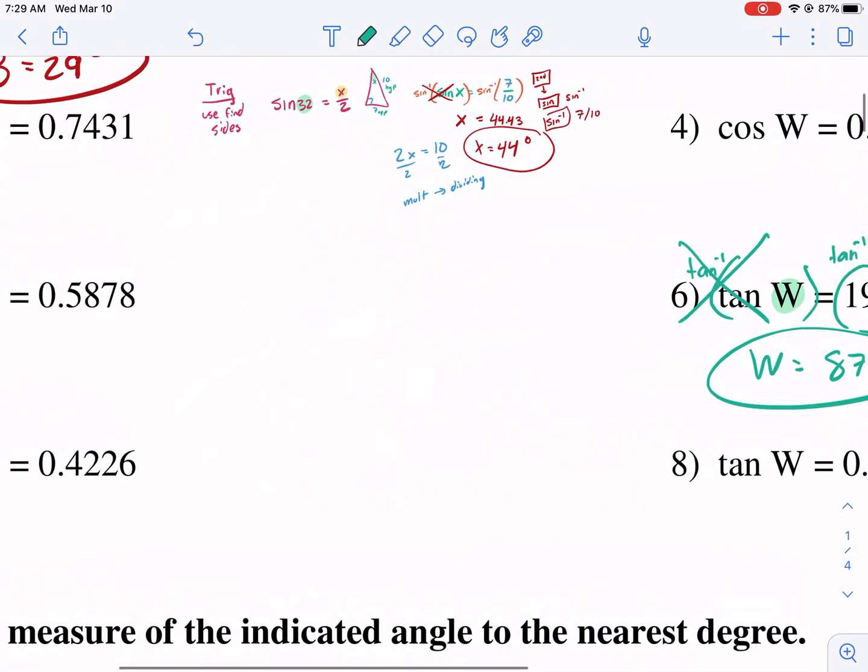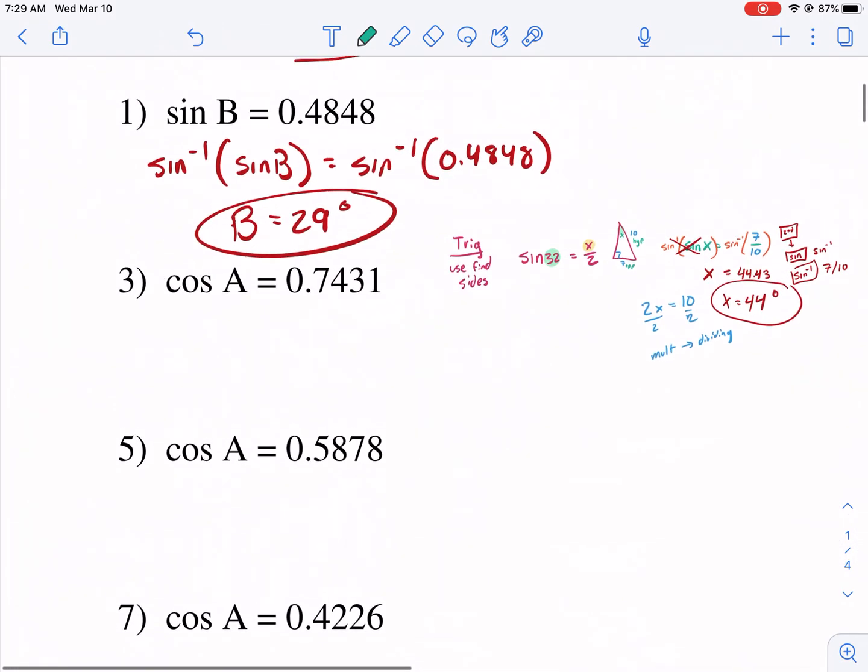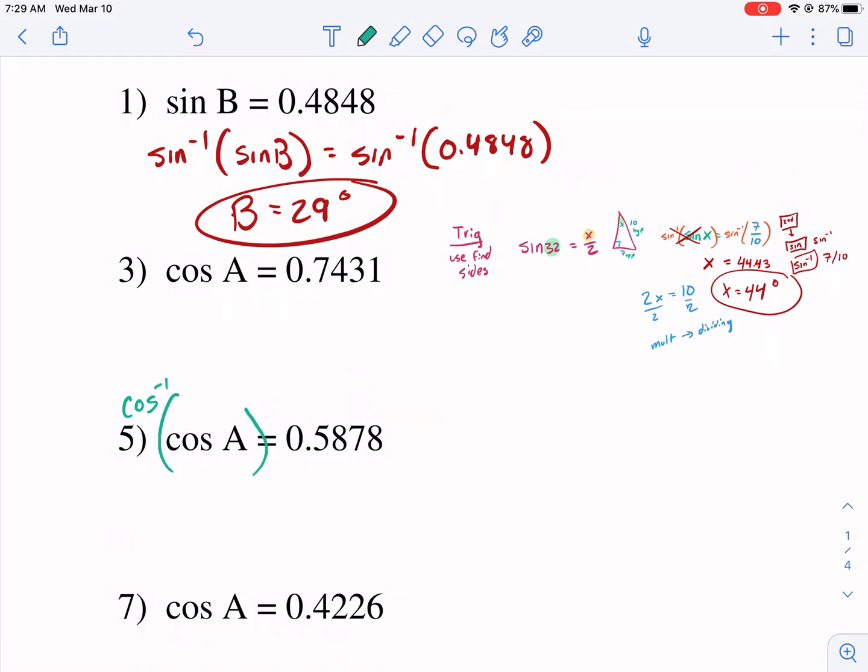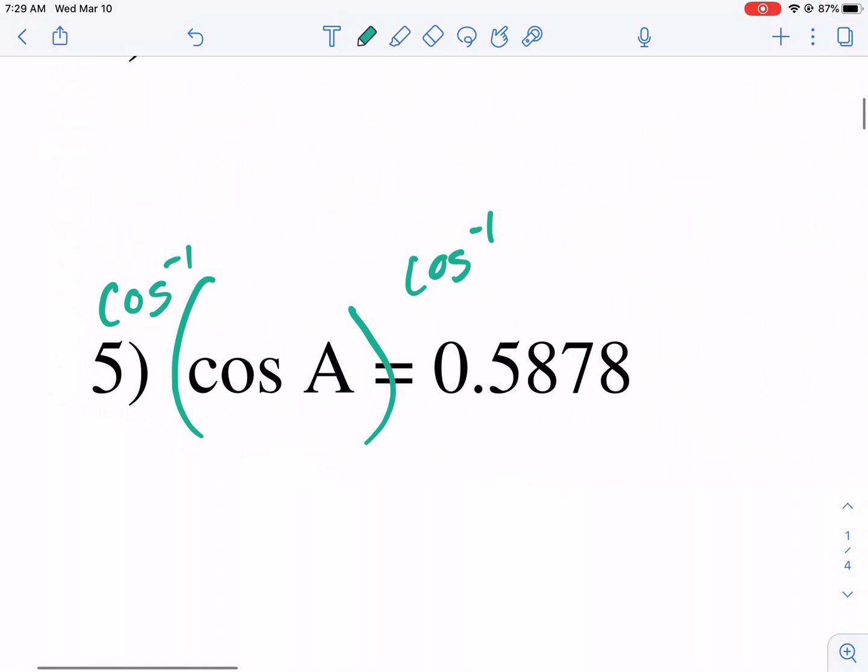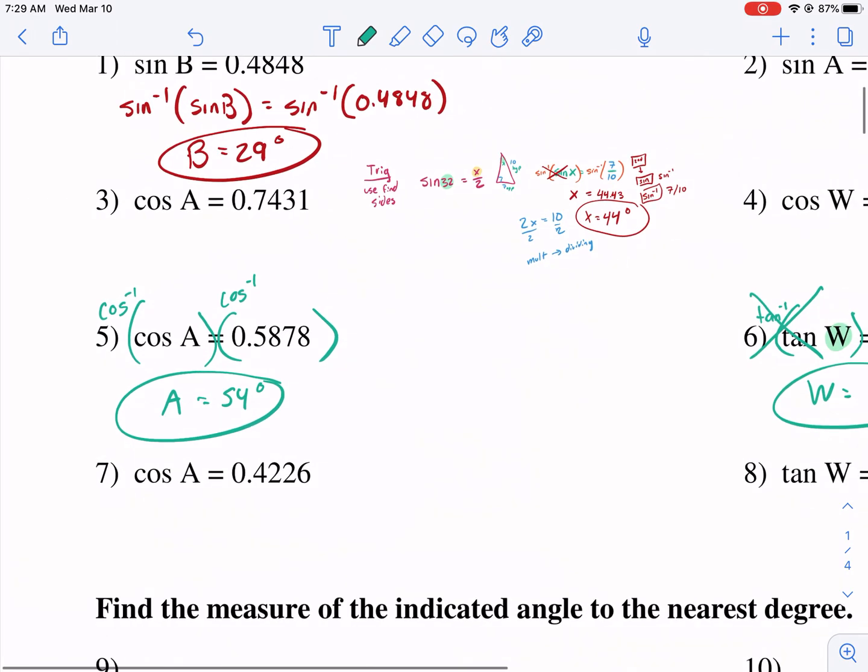Let's go ahead with tangent. Tangent of W, I need to take the inverse tangent of both sides. This will cancel out the tangent. We're left with just W. So inverse tangent, second tangent key, 19.0811, hit enter, and I get 87 degrees rounded. Let's do a cosine one. Inverse cosine both sides. I don't usually write inverse cosine each time. I just do it on my calculator. 0.5878 and I get 54 degrees.